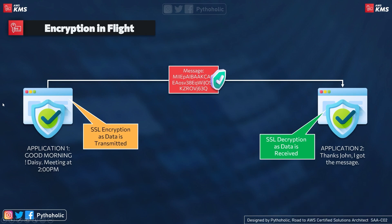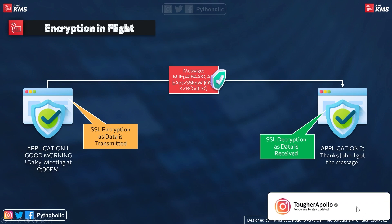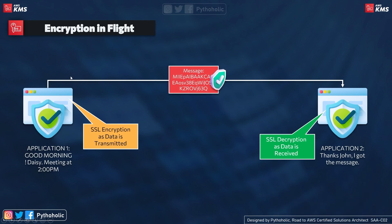If you are using an application and trying to send a message to another application over the internet, it has to be secure. Here we are using SSL encryption for the data — encryption in flight. Remember: whenever you see a question or concept in AWS that talks about encryption in flight, think about SSL and TLS.